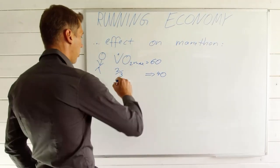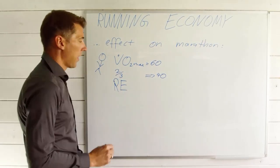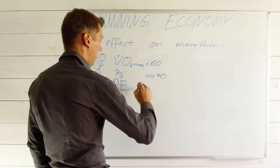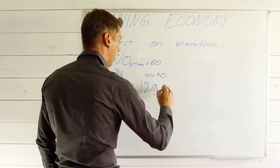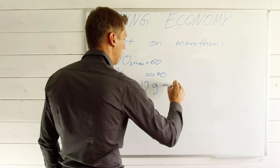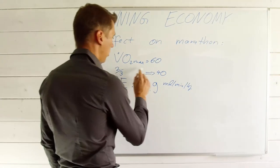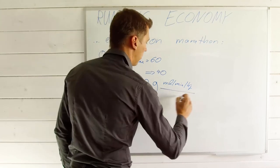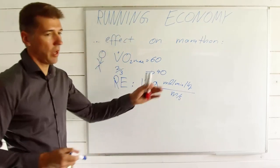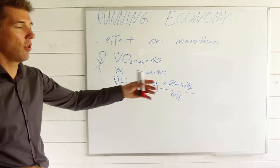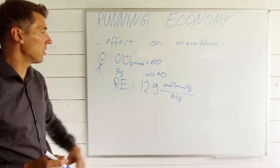And now let's assume the running economy, often used as RE, is a typical value of 12.9. This is milliliters per minute per kg per meters per second. There are different ways you can express it, per kilometer per hour, whatever. But let's, for this example, stick with this one.